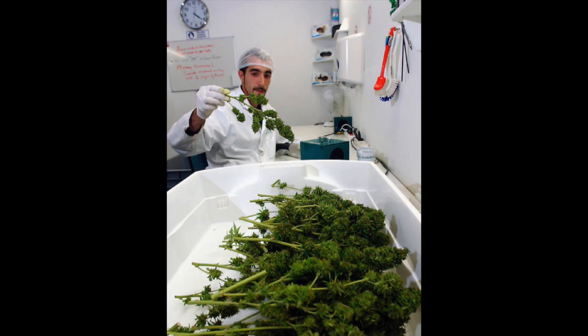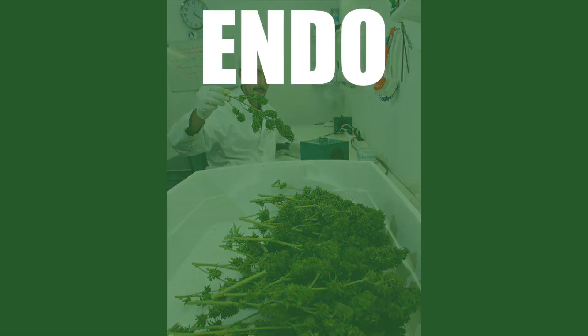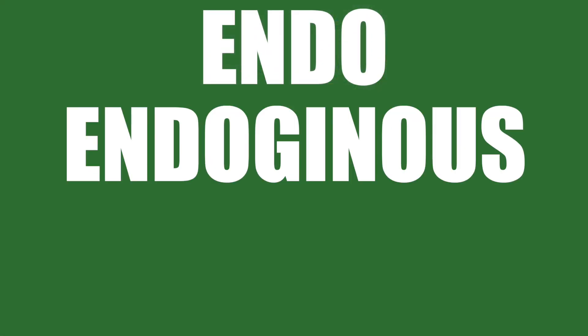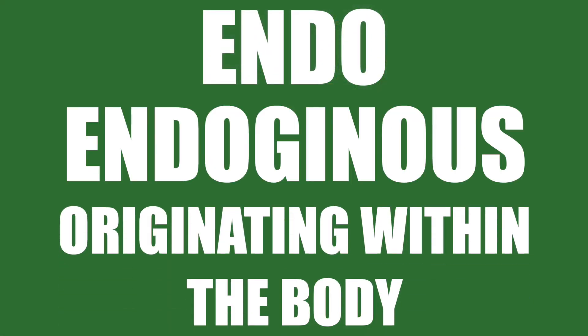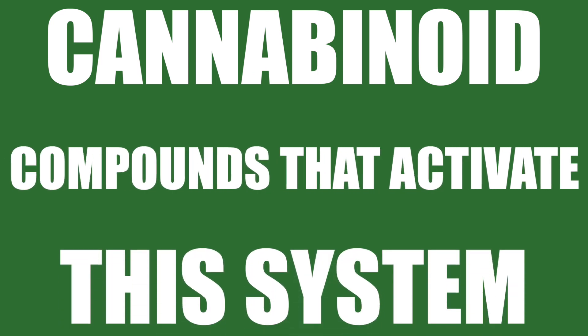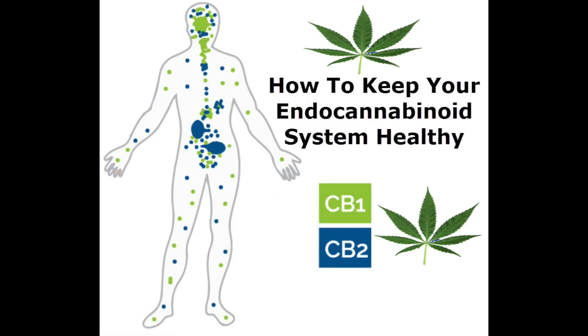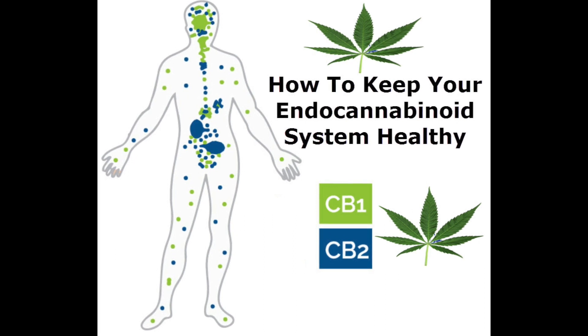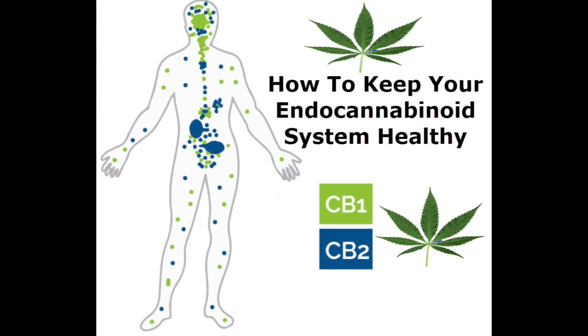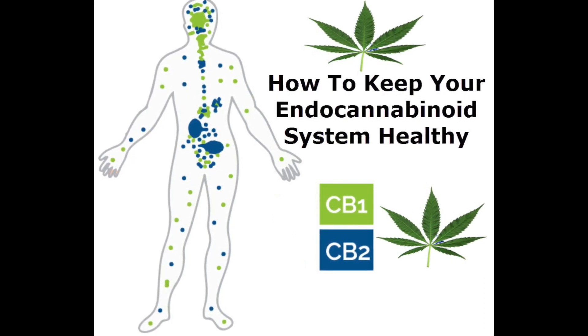Scientists first discovered the system while trying to understand the effects of cannabis and named it the endocannabinoid system for this reason. Endo stands for endogenous, which means originating within the body. Cannabinoid refers to the group of compounds that activate this system. The endocannabinoid system is a major target of medical research because of its widespread effects and therapeutic potential.